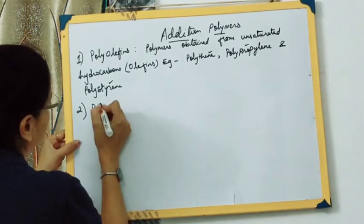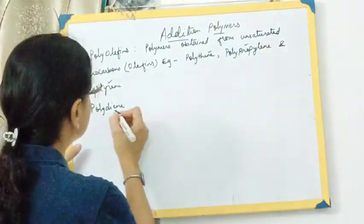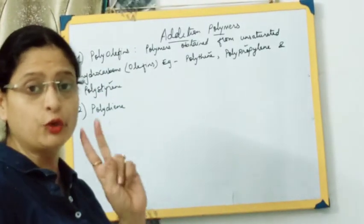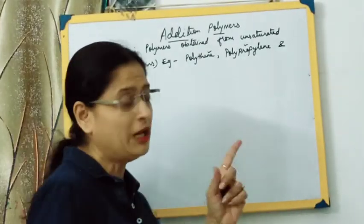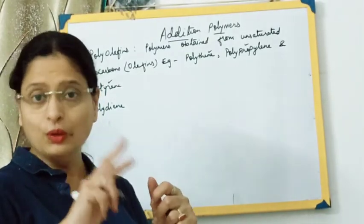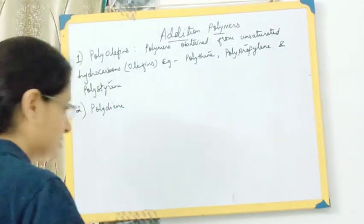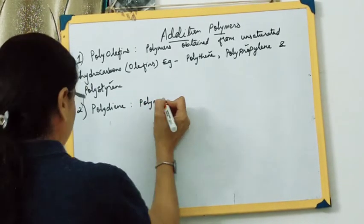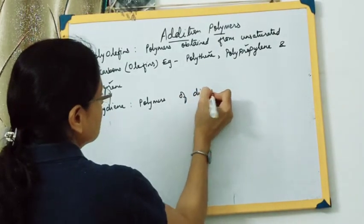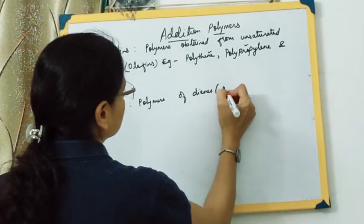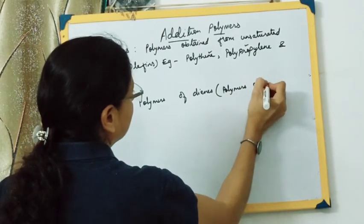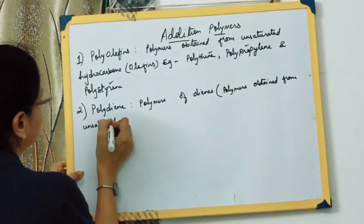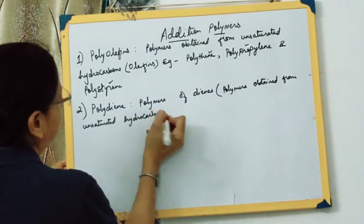Polydienes — the word itself tells us what they mean: polymers containing dienes. A diene is an unsaturated hydrocarbon containing two double bonds. So these are polymers obtained from unsaturated hydrocarbons containing two double bonds.